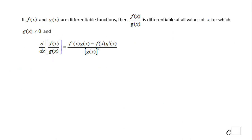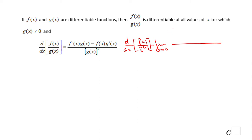Let's move to the quotient rule. I'm going to use a similar approach to prove it, using the limit definition. We have the derivative with respect to x of f(x) over g(x). Using the limit process, this equals the limit as delta x approaches zero of [f(x + delta x) over g(x + delta x)] minus [f(x) over g(x)], all over delta x.